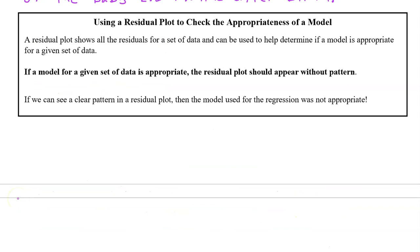We can use something called a residual plot to check the appropriateness of a model. A residual plot shows all the residuals for a set of data and can be used to determine if a model is appropriate for a given set of data. If a model for a given set of data is appropriate, the residual plot should appear without pattern. If we see a clear pattern in a residual plot, then the model used for the regression was not appropriate.